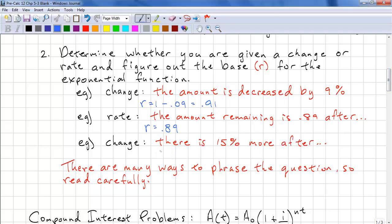Another way of having a change is an example like this. There is 15% more after dot dot dot. r equals 1 plus 15% is 0.15. So our base is 1.15. Or you could say that that's your ratio. In English, there are many ways to phrase a question. So you have to read carefully and I can't show you all the different ways to form these questions.